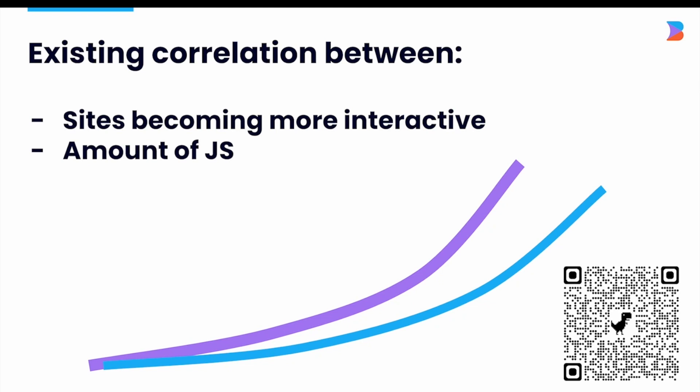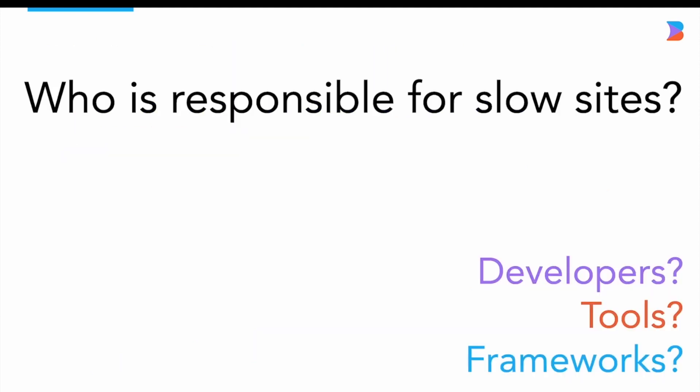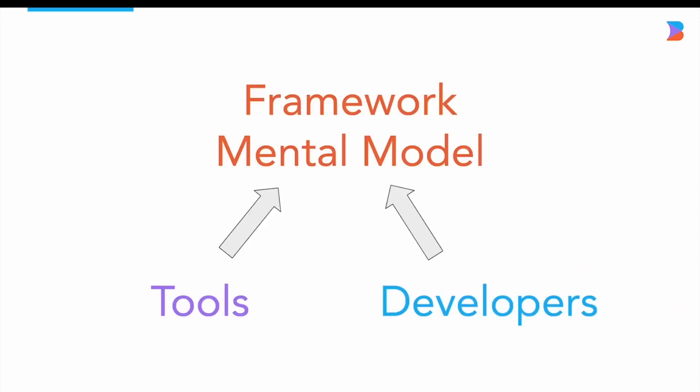JavaScript is the biggest culprit to slow sites. So who is responsible — could it be the developers who create and maintain the sites, the tooling developers use, or the underlying frameworks themselves that are dragging down performance? It's pretty common for developers to get the blame, as the old saying goes: a developer can make a slow site no matter what the framework.